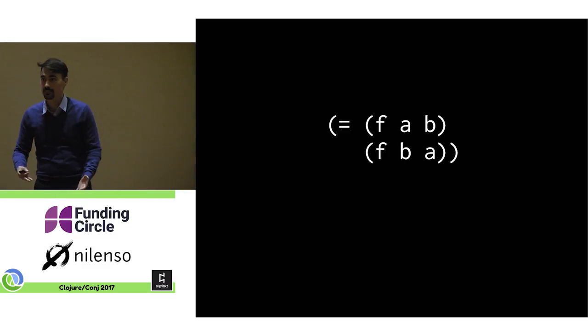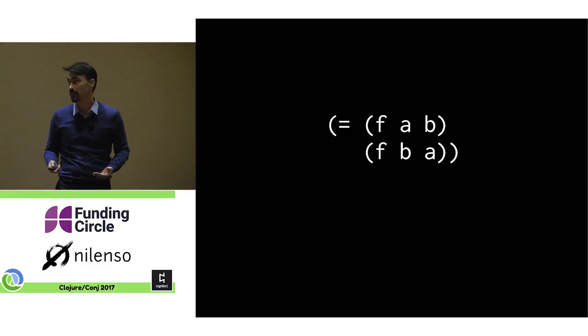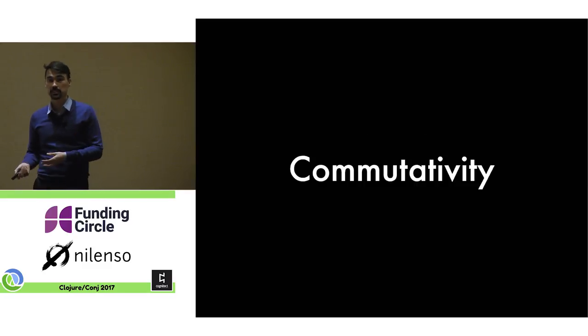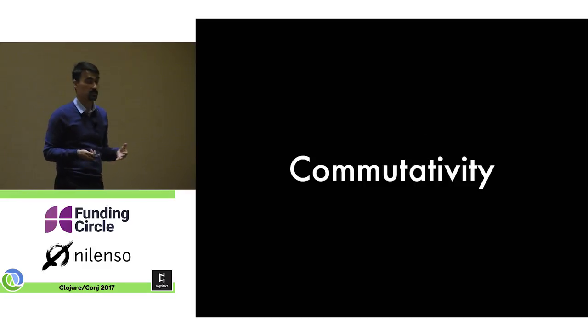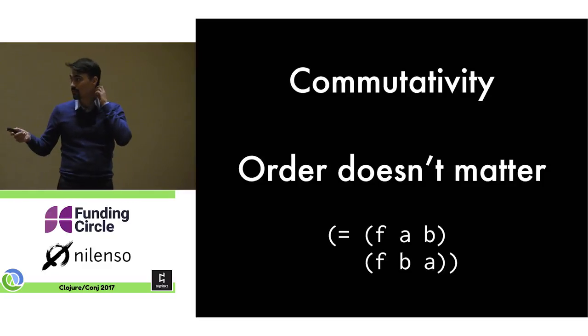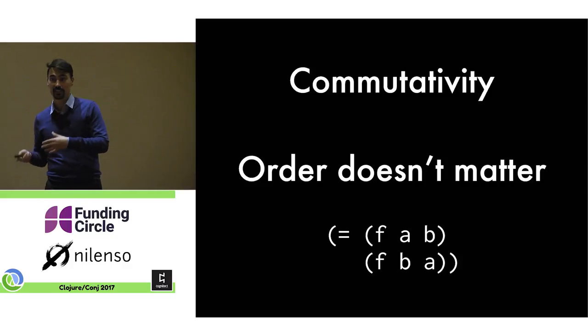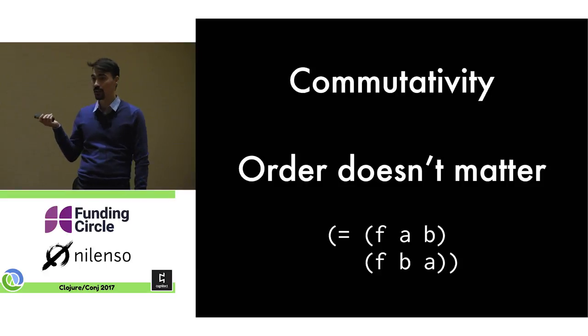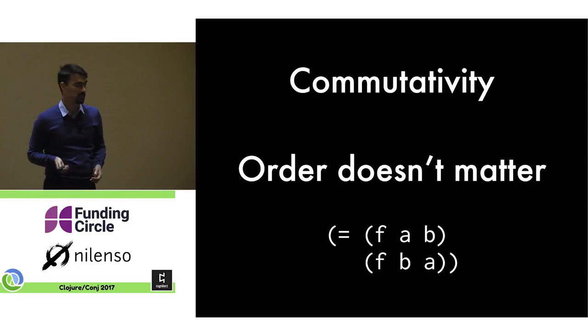And then we can pull this algebra trick and say, we can actually say this about any function that we want to write. We could say, hey, it has this property, our order of arguments doesn't matter. And mathematicians have called this commutativity. Order doesn't matter. And the reason I'm bringing this up is commutativity is a great property. And mathematicians have been talking about it for a long time. But we just derived it really quickly.